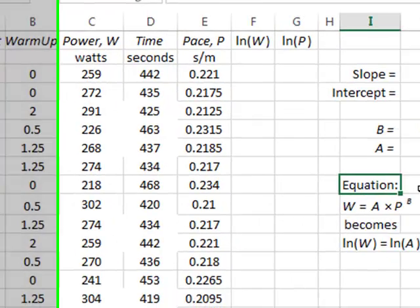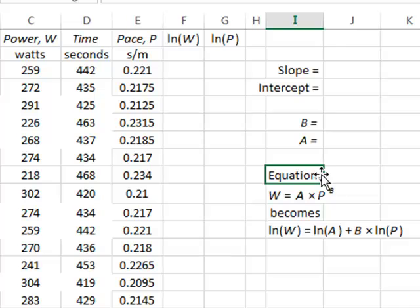The aim of this part of the analysis was to see how well the data fits a relationship between the power W and the pace P, given by W equals a constant A times P to the power B. In this, we are assuming that this relationship is independent of the different warm-up periods, and that in fact the different warm-up periods are simply replicate measurements.